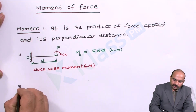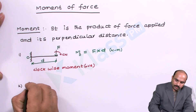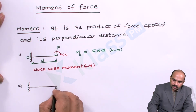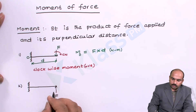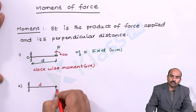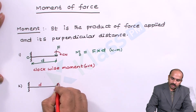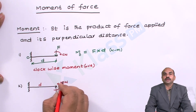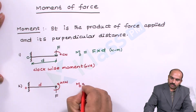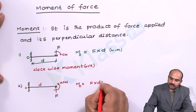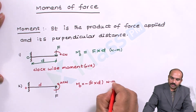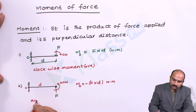The second type is the anticlockwise moment. The moment with respect to O is equal to force into its perpendicular distance D, and the anticlockwise moment is taken as negative. The units are the same — Newton meter — and it is a counterclockwise or anticlockwise moment.